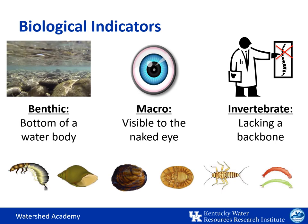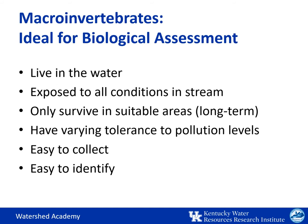Also, when they die and decay, the nutrients in their bodies become food for other benthic macroinvertebrates in the stream. Literally thousands of different species of macroinvertebrates have been found in Kentucky's streams and rivers. In general, when seeking ideal indicators of watershed health, we are looking for the following characteristics.